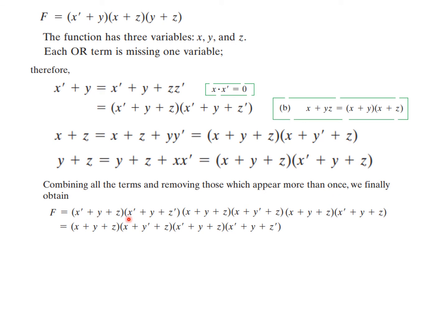So combining all the terms, our function will be looking like this and ignoring the terms that are repeating. So we get this final value. You see, xyz and xyz is repeating. So we get rid of that.